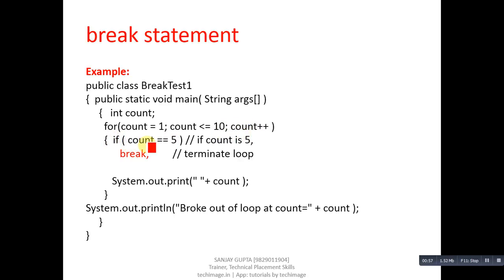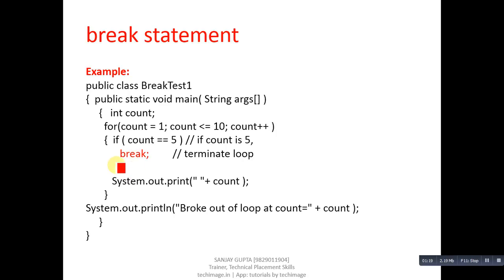There is an if condition: if count equals 5, then the break keyword executes. So when the value of count is equal to 5, this condition becomes true and break terminates the execution of the loop. This loop will therefore repeat only four times, printing 1, 2, 3, and 4 on the console. When count equals 5, break terminates the for loop.